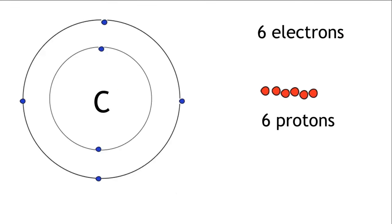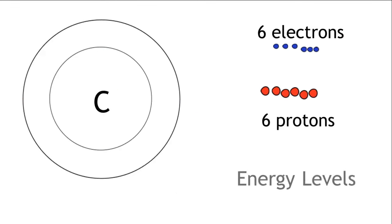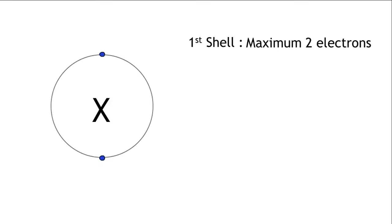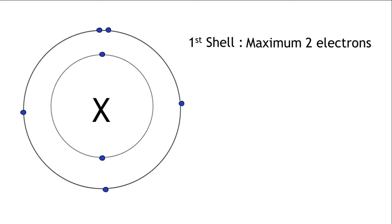The electrons in the atom are organised around the nucleus in different energy levels, or shells. Shells can only hold a certain amount of electrons. The first, and innermost shell, can only hold a maximum of two electrons. The shells which come after this can hold a maximum of eight electrons.